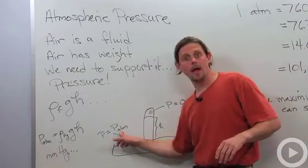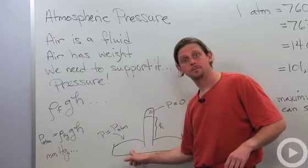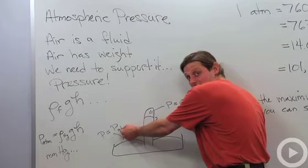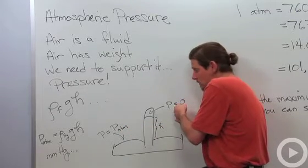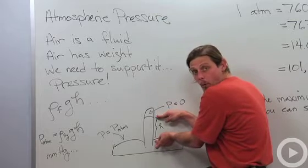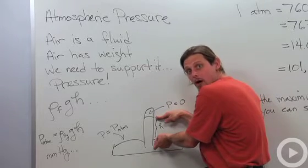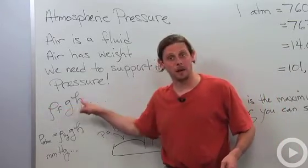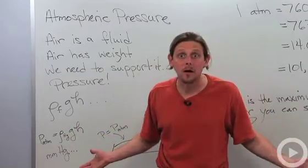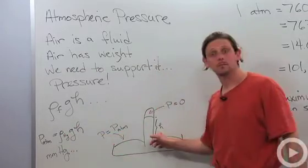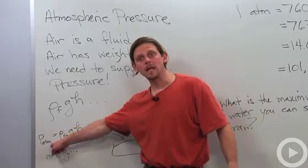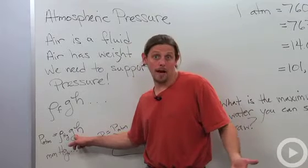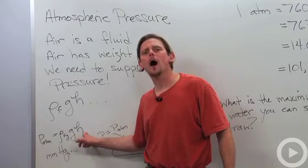Out here on the other hand we've got the whole atmosphere pushing down. So that means that the difference in pressure between the atmospheric pressure and zero is supporting this height of a column of mercury. And now we can use density times g times h because the density of the mercury is about constant and we can measure the height.